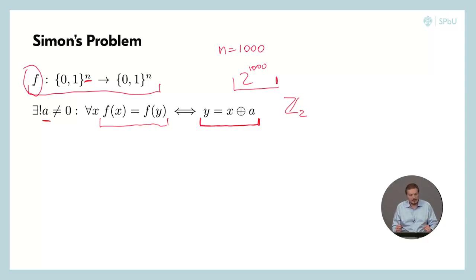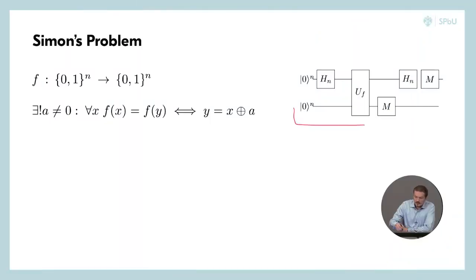So this problem easily becomes intractable. But even if we do have enough memory to solve this problem, we will need approximately this number of function queries in the worst case to finally find the inputs for which the function values would be equal. So all this sounds too sad, so let's quickly proceed to the quantum case. So here's the Simon's algorithm.